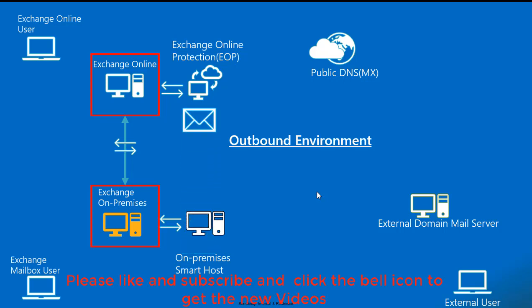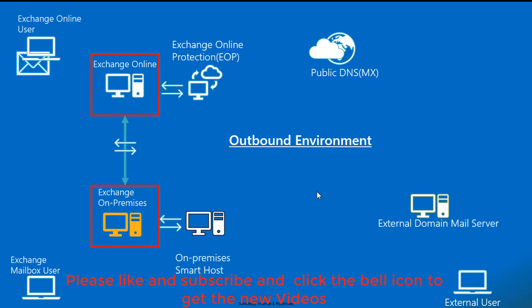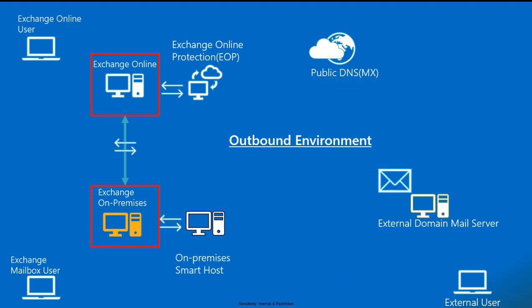Once the smart host receives the email, based on connectors configured during hybrid configuration, it sends all mails directly to Exchange Online Protection. This is where you can apply transport rules and data loss prevention from Exchange Online. Once EOP scans the email and finds the mail is composed for a remote user, it is delivered to the Exchange Online user. If it is for an external user, EOP resolves the MX record for that external domain and delivers the mail directly to the external domain server using SMTP port 25.